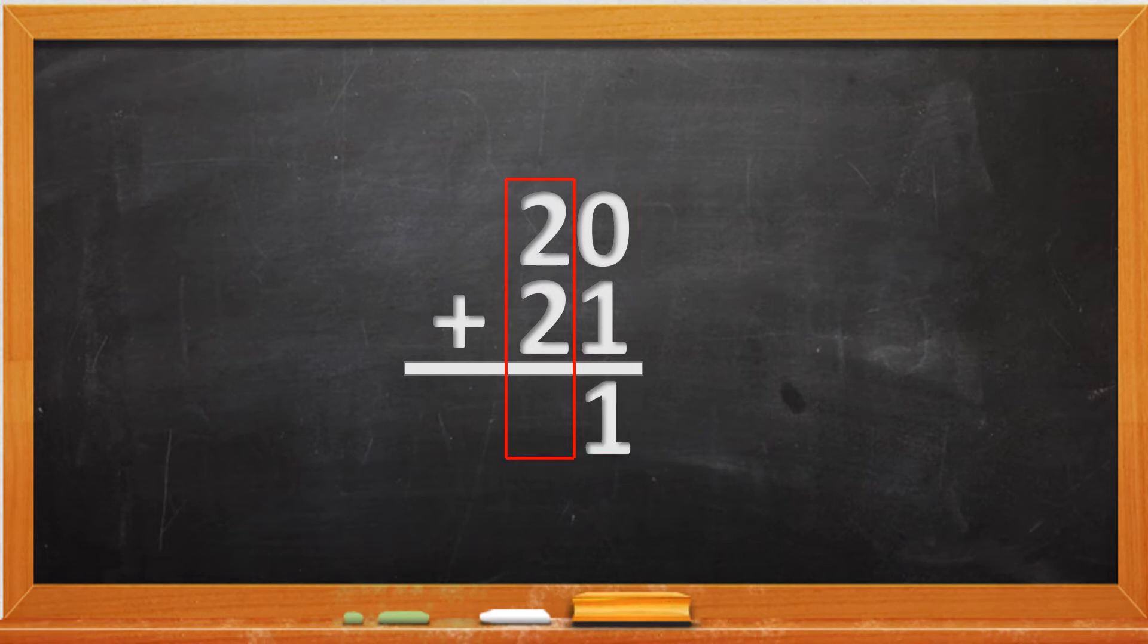Then we go to the left column: 2 plus 2. That is also very easy and the answer is 4. So 20 plus 21 will equal 41.